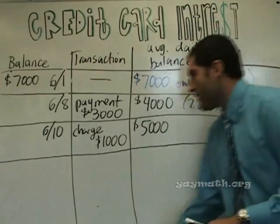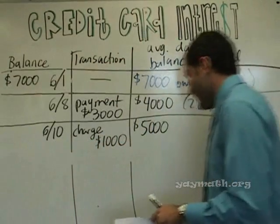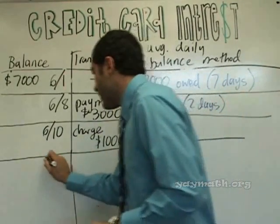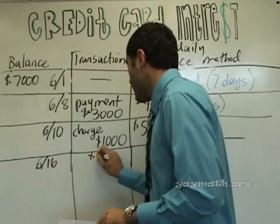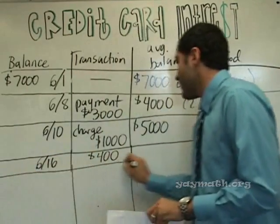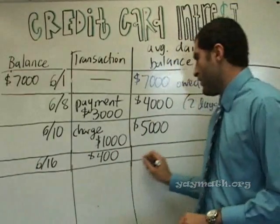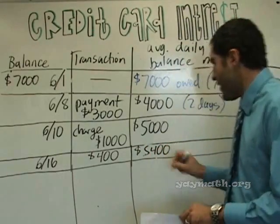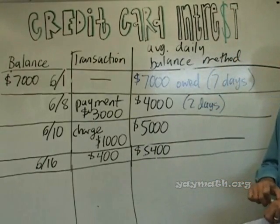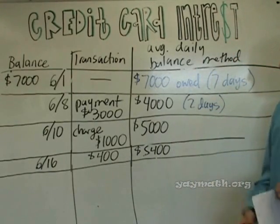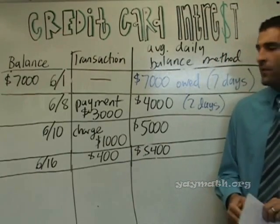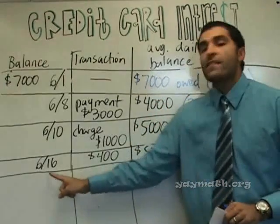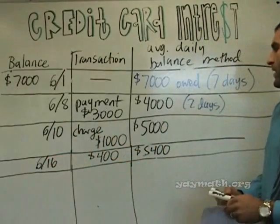The next transaction is on the 16th — also a charge, for $400. How much do we owe now? $5,400. And how long did we owe $5,000? Counting up: the 10th, 11th, 12th, 13th, 14th, 15th — six days. Because on the 16th that changed. So we owed $5,000 for six days.